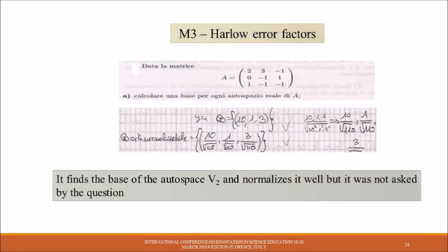Harlow error factors. The students make a correct procedure which does give a correct answer but which is not what required by the given problem. He or she finds the base of the outer space V2 and normalizes it as well, but was not asked by the question.